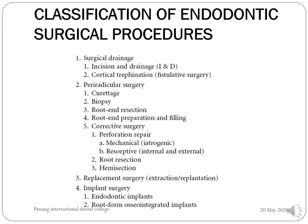We have a variety of procedures under surgical endodontics. It starts with incision and drainage, then cortical trepanation. Working around the root, it starts with curettage, biopsy, root end resection, root end preparation and filling. You have corrective surgeries including perforation repair, root resection, and hemisection. Then there can be replacement surgery with extraction or replanting, and endodontic implants using root form osseointegrated implants.